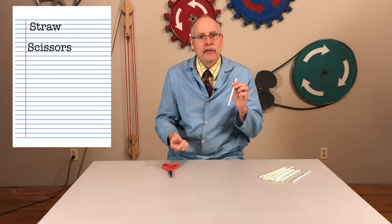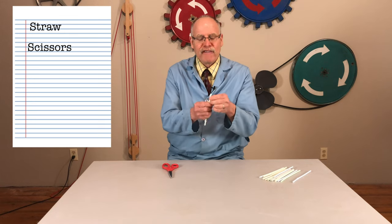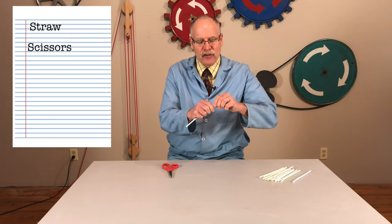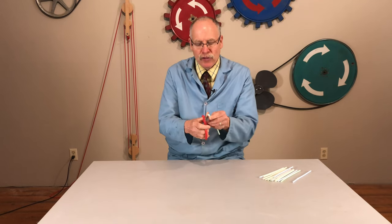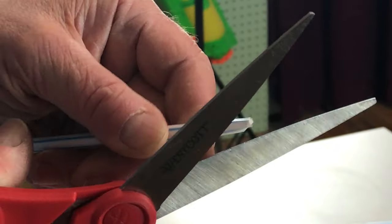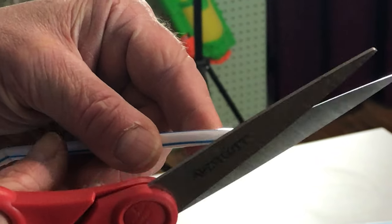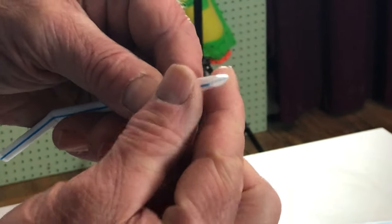What you're going to do is make the reed. First thing you're going to do is flatten the end of this. I just flatten with my fingers and then I use my teeth, and I just flatten it down. Now you're going to need to point it with the scissors. When you're done it should look kind of like a chicken beak.